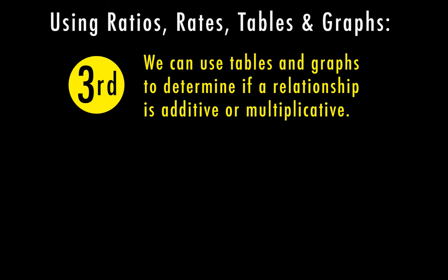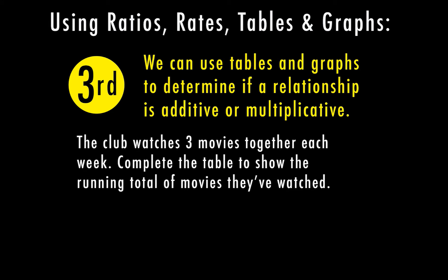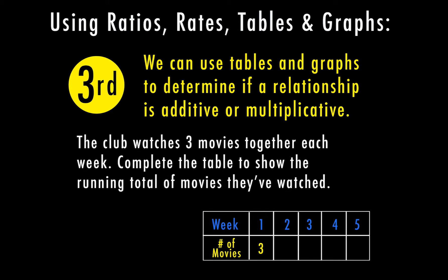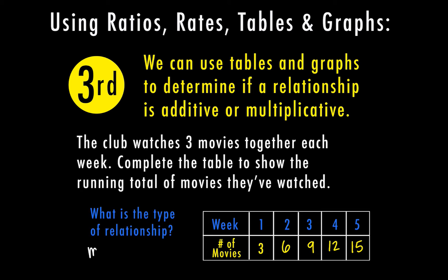We can also use tables and graphs to determine if a relationship is additive or multiplicative. The club watches three movies together each week. We'll complete the table to show the running total of movies watched. In week one they watched three movies; after week two, six movies; after week three, nine; after week four, twelve; and after week five, fifteen. Every week the movies increase by three, so this would be a multiplicative relationship.